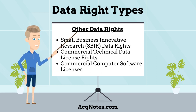There are three other data rights types that are used but are not as common as the others. These are: 1. Small Business Innovative Research Data Rights — this covers all technical data or computer software generated under a small business innovative research contract; government users cannot release or disclose it outside the government except to government support contractors. 2. Commercial Technical Data License Rights — this type applies to technical data related to commercial items developed at private expense, managed in the same manner as limited rights. And finally, 3. Commercial Computer Software Licenses — this applies to any commercial computer software or software documentation, managed as specified in the commercial license offered to the public.